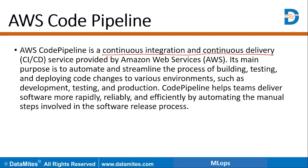Its main purpose is to automate and streamline the process of building, testing, and deploying code changes to various environments such as development, testing, and production. So the main purpose of CodePipeline is to automate and streamline the process of your pipeline.